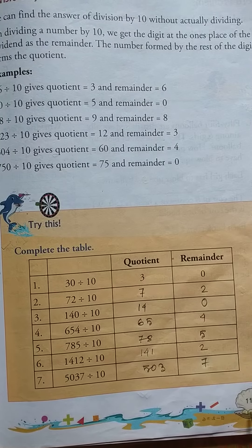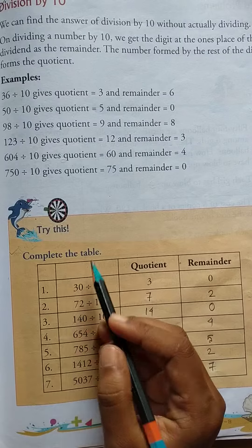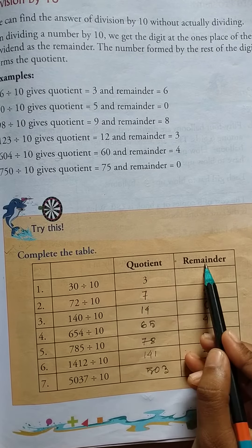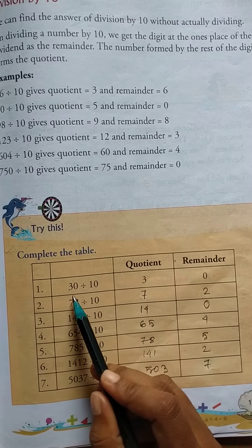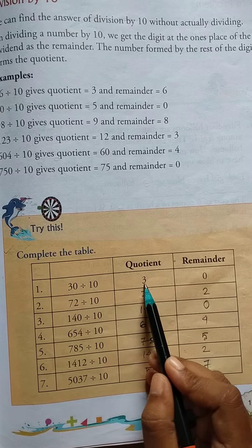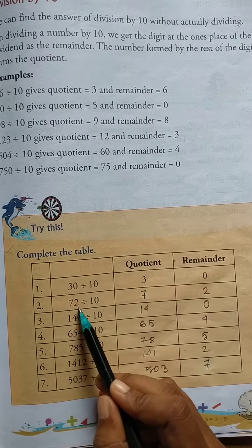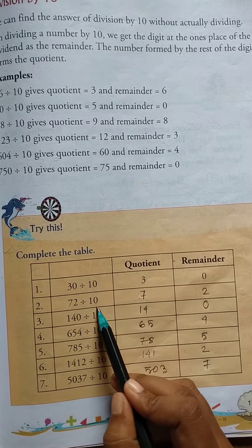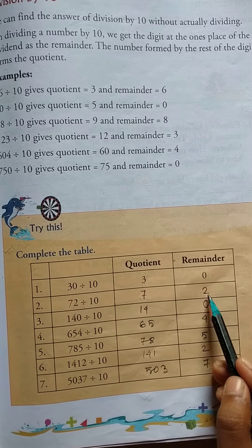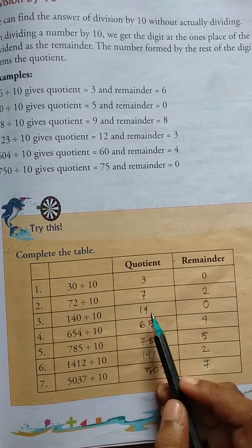Page 117 — division by 10. Firstly, quotient and remainder. 30 divide by 10 equals 3 — quotient 3, remainder 0. Then 72 divide by 10 equals 7 — quotient 7, remainder 2. Then 140 divide by 10 —